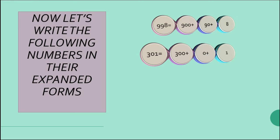When a place has zero, we write 0 in that position. The units place is 1, so we write 1. In the expanded form, we write 300 plus 0 plus 1.